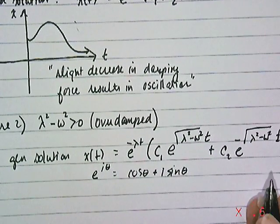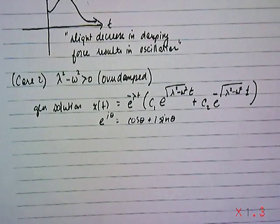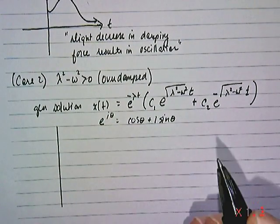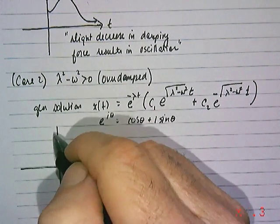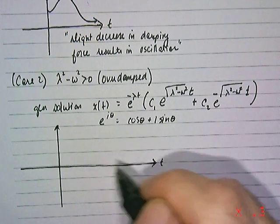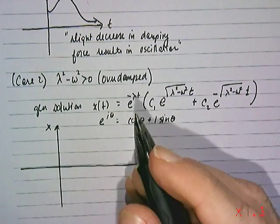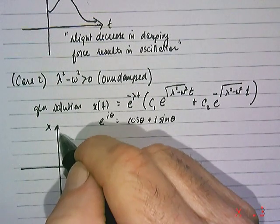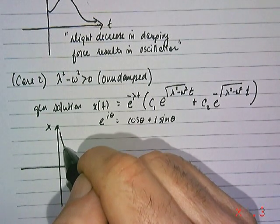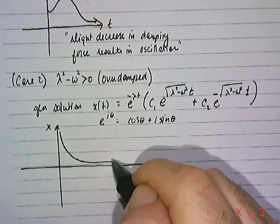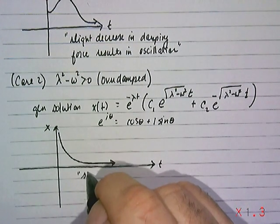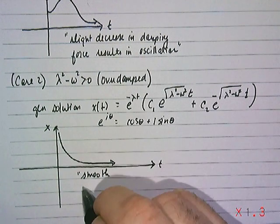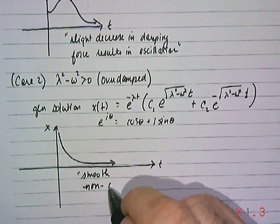But that won't be necessary in this case. In general, the solution in this particular case - if this is time and this is displacement x, you would see a very smooth non-oscillatory behavior. It's eventually just going to dampen itself out. It's overly damped, it can't oscillate. This is a smooth non-oscillatory motion.